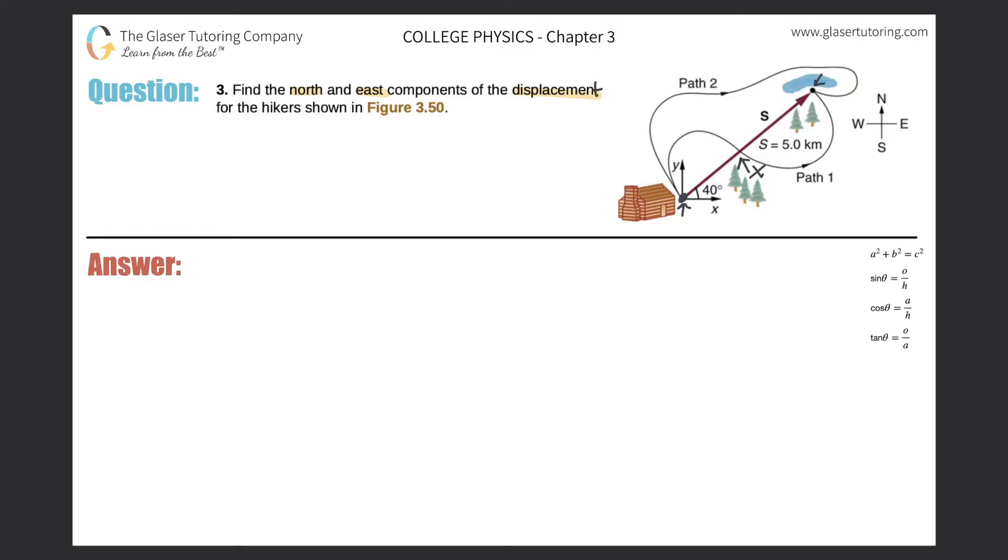Now it says to find the north and east components, so what that means is create a triangle from this displacement so that that triangle has a northern component and an eastern component. Let me put a little dot up here and draw it on the picture.